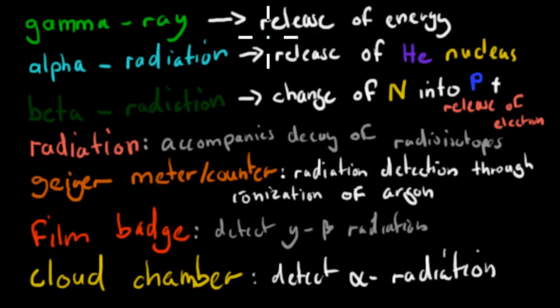Gamma ray, that's a type of radiation decay, which releases energy. So just release of energy. Alpha radiation is a type of radiation that releases a helium nucleus. So that's mass of four, two protons, two neutrons in that nucleus.